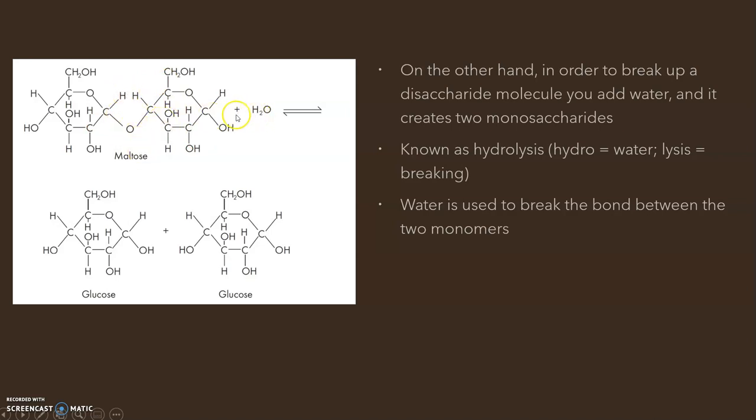Here we have that same diagram. We've got maltose, which is two glucose monosaccharides plus water. To break this maltose up, we have to add the water. You've got the maltose, add some water, and boom, you're going to get two glucose molecules. I hope that makes sense. I know it's a little bit tricky to grasp and imagine.